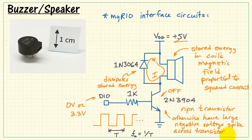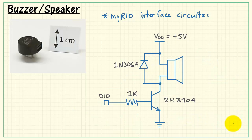and then it dissipates the stored energy in the coil. Without this diode, you would have a large negative voltage spike appearing across the transistor, and eventually this is going to damage the transistor. So the diode is an important protection feature in this circuit.